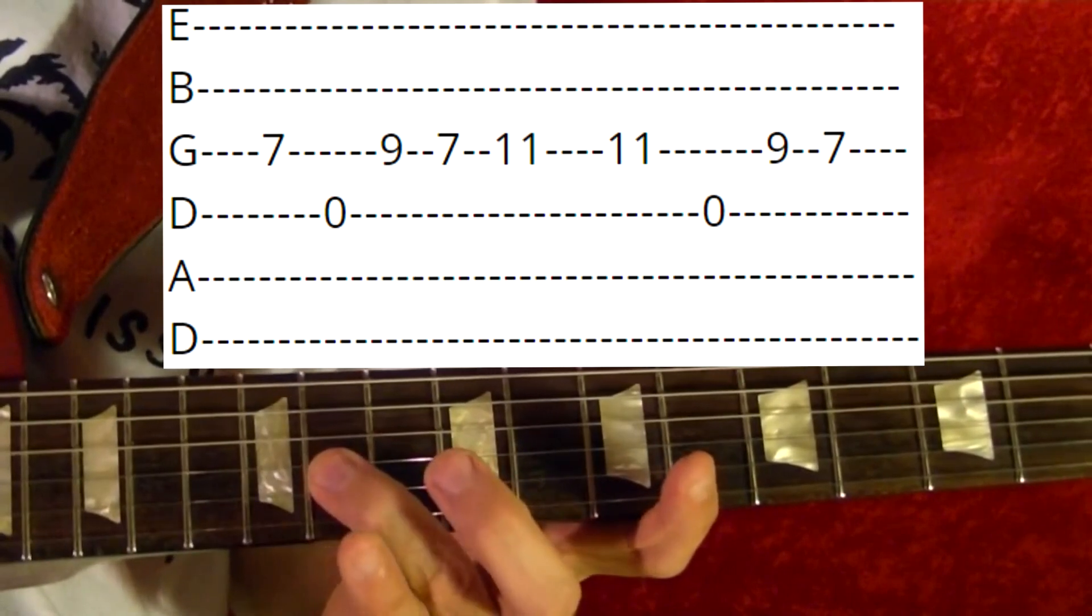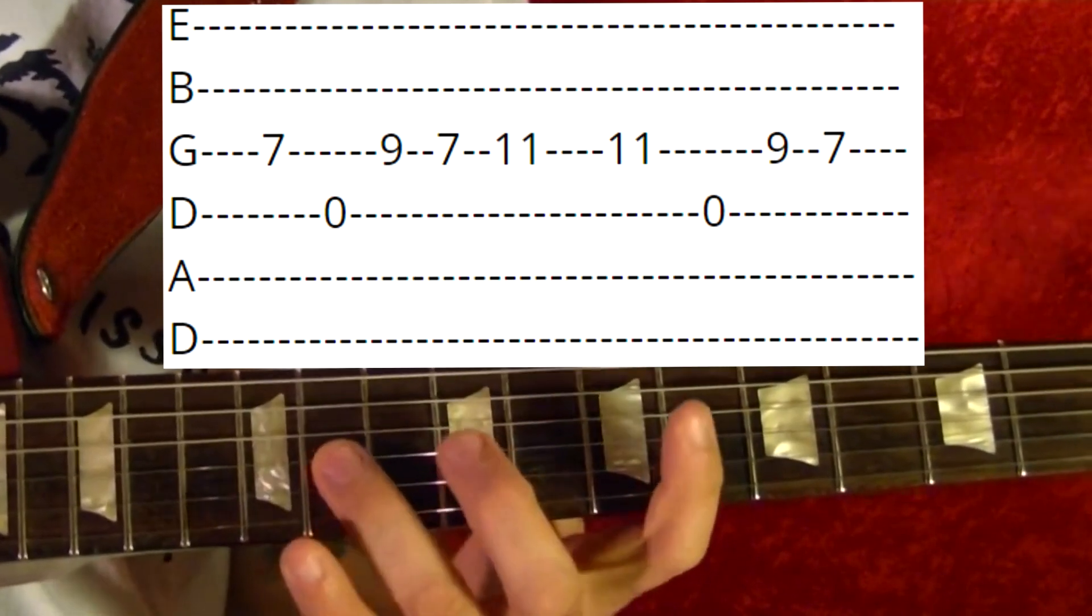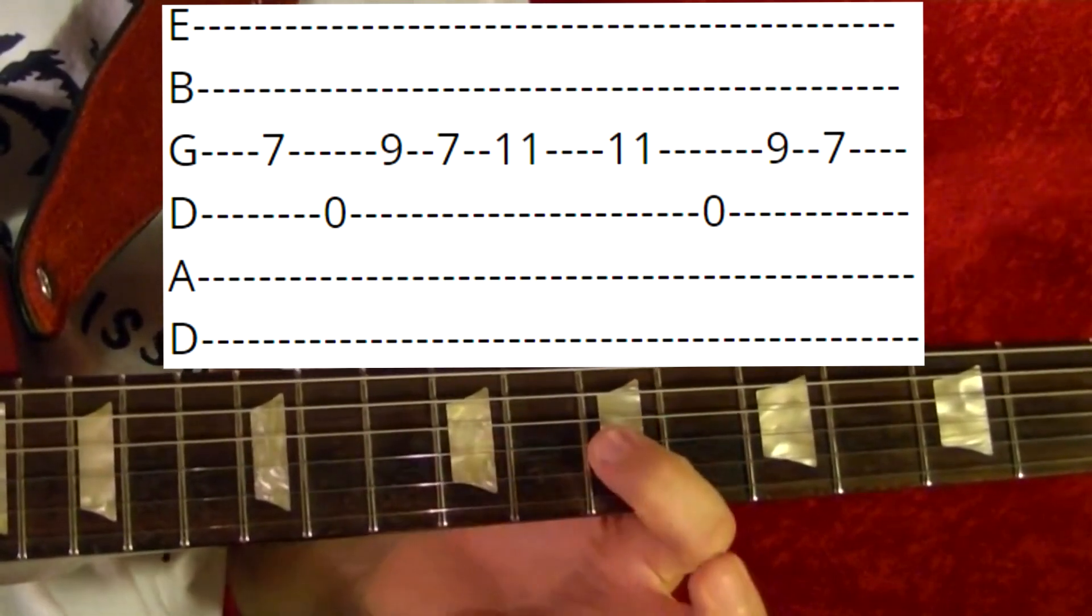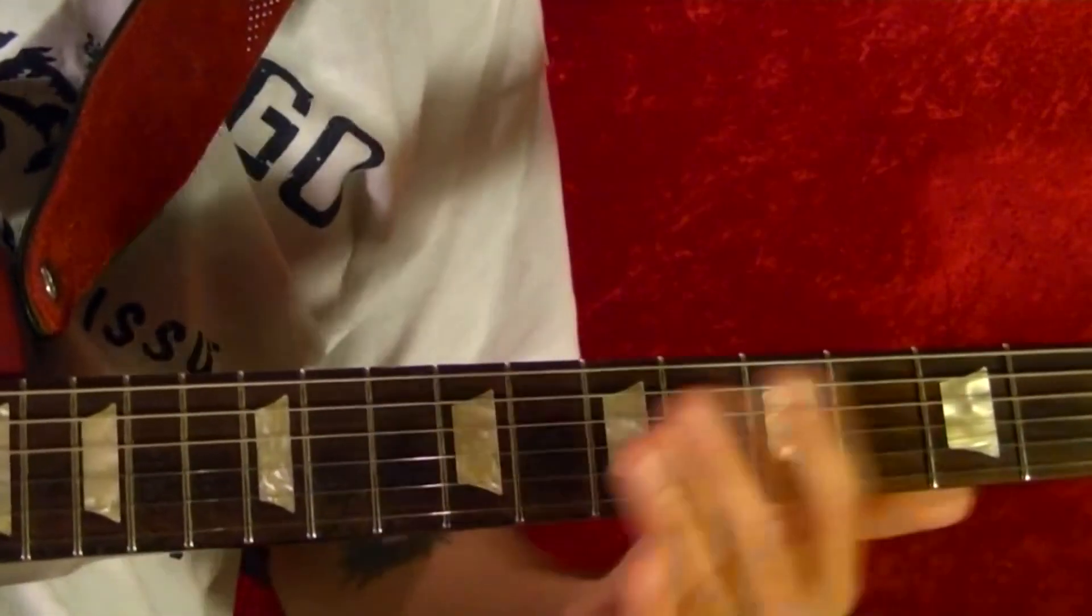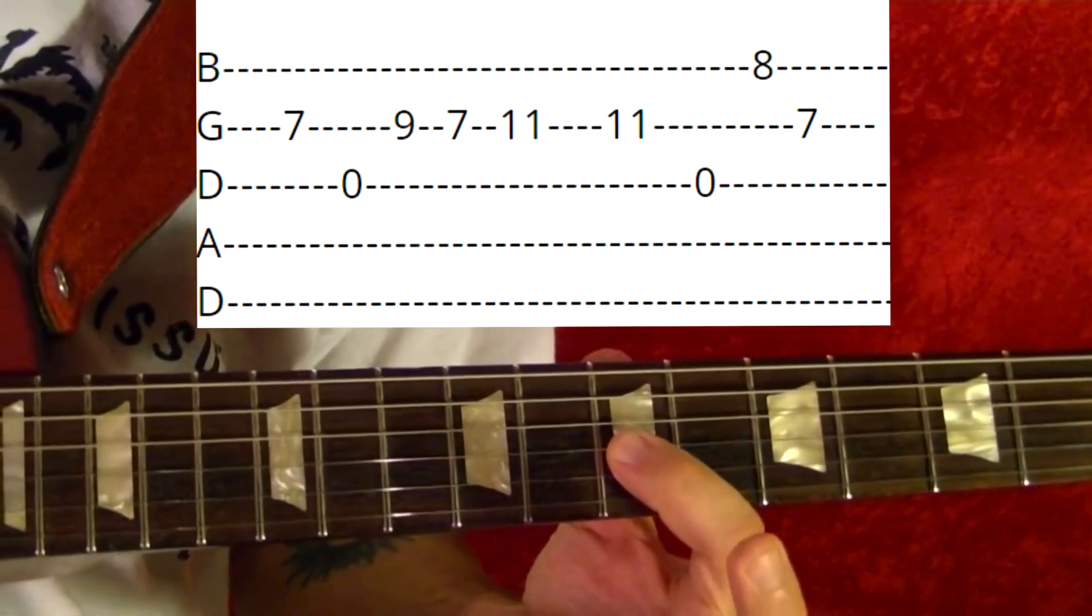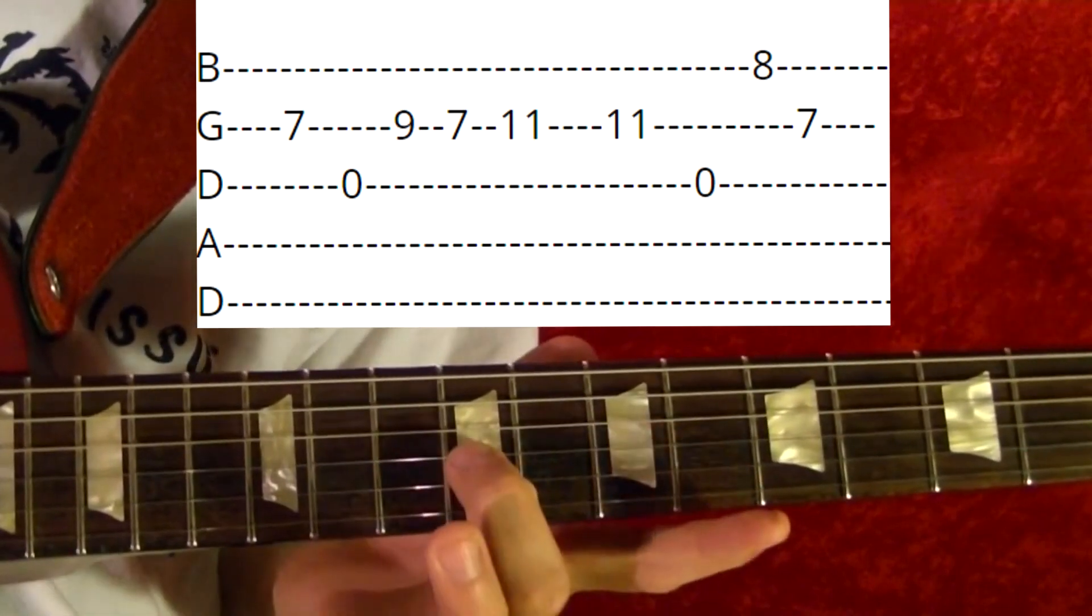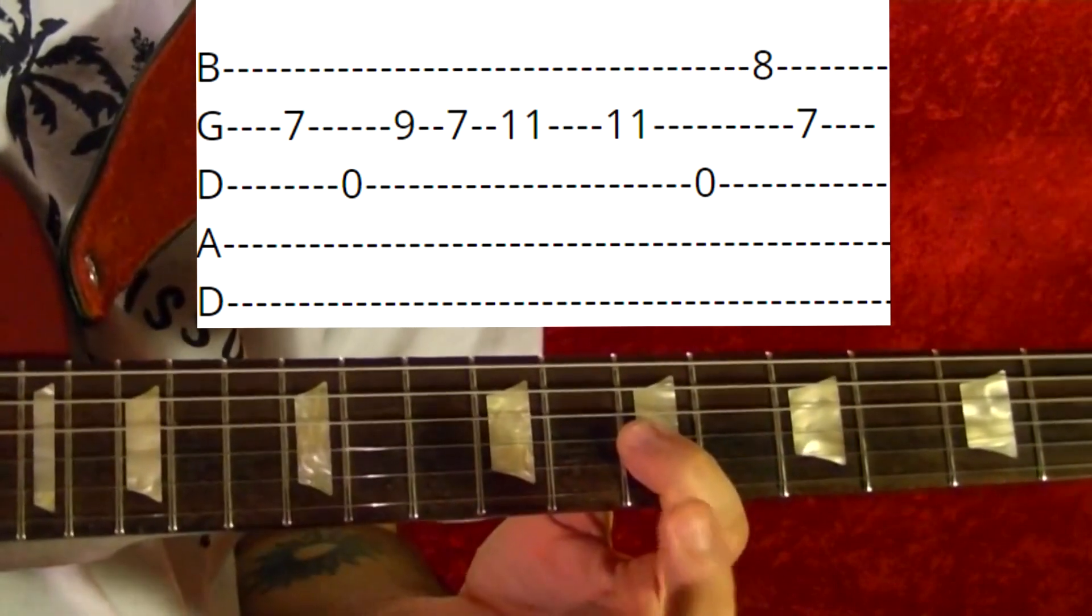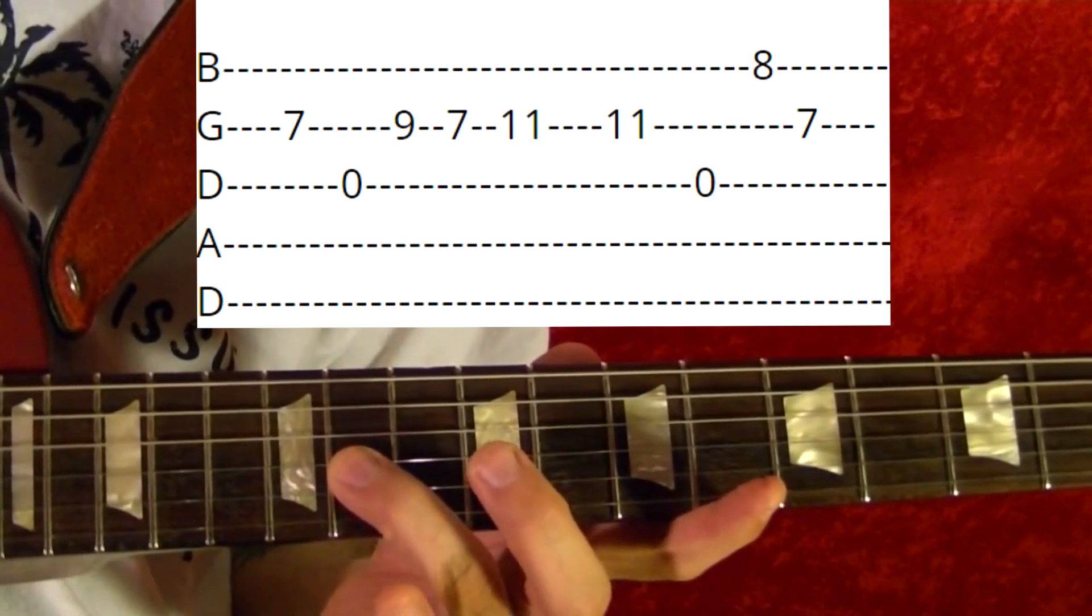So it's pretty much the same thing again, so that's third string seventh fret, fourth string open, ninth on the third string, seventh, eleventh, eleventh again, fourth string open.